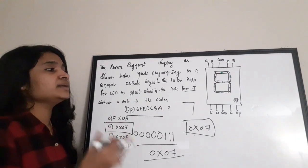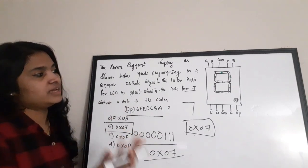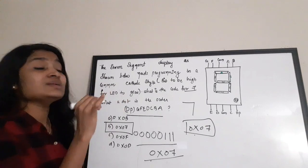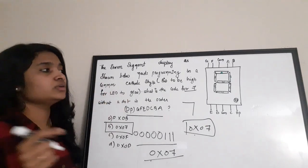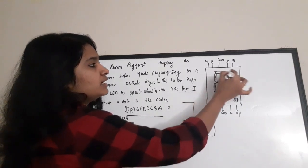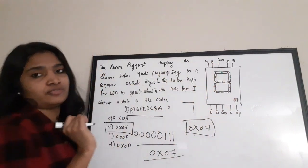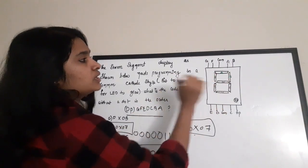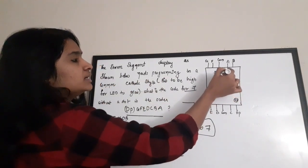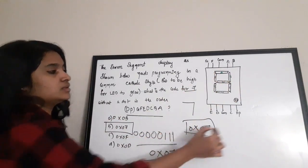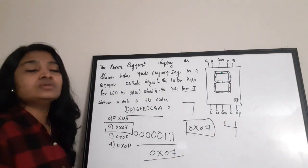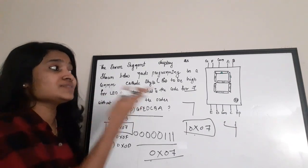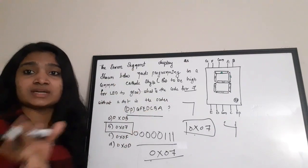The correct answer is option B. For any number on the 7-segment display, you first write the number, identify which segments need to glow, then determine the bit values. For example, '0' needs a, b, c, d, e, f; '8' needs all segments; '4' needs f, g, b, and c. Identify the segments, then set the input data accordingly.